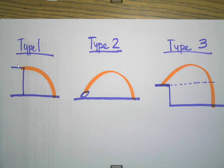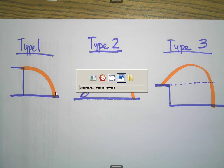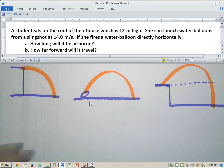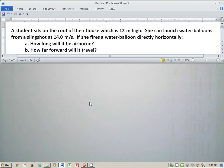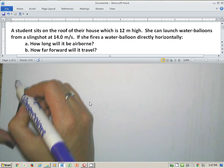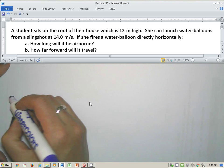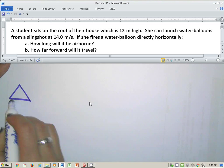If you'll stick with me, we're going to look at some Type 1 problems. They're all going to be Type 1s because it simply starts out somewhere up in the air, and then it falls down. So here is my first problem. We've worked these in class, if you're in my physics class. It says a student sits on the roof of their house, which is 12 meters high, and she can launch water balloons at 14 meters per second.